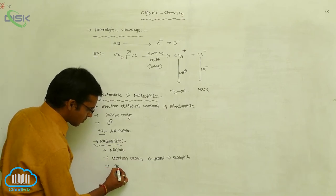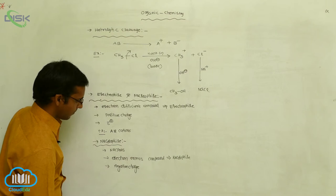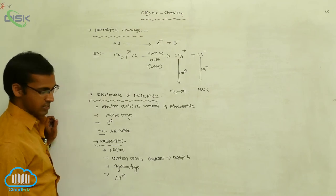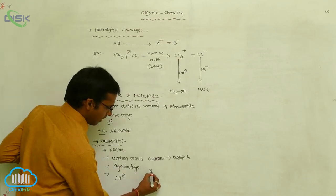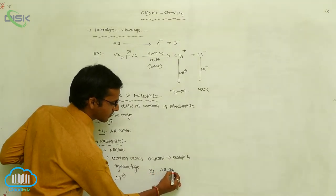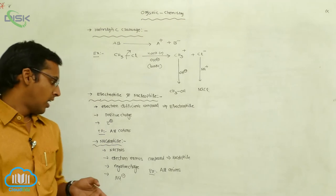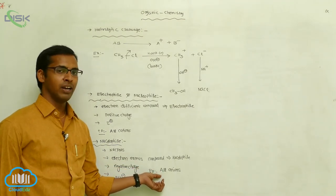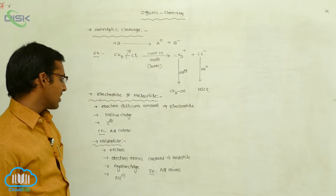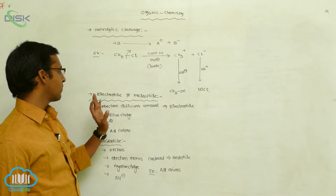Nucleophiles generally carry negative charge and are represented with Nu⁻. The examples of nucleophiles are all anions: Cl⁻, Br⁻, SO3H⁻ — chloride, bromide, iodide, sulfonic acid — or amide, NH2⁻. All anionic species are examples of nucleophiles, and all cationic species are examples of electrophiles.